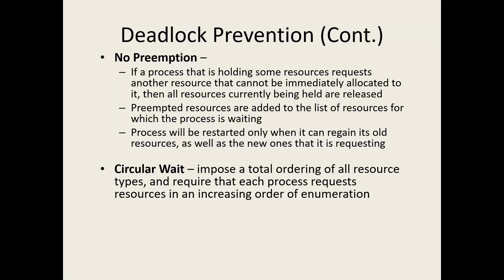No preemption: if there is no preemption, none of the processes will stop willingly. If we include preemption, processes can stop and release resources, giving another process a chance to complete. Some processes might complete 90% of execution but still terminate and release all resources. This means low resource utilization and low system output, but by avoiding no-preemption, we can avoid deadlocks.